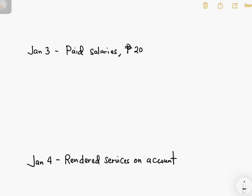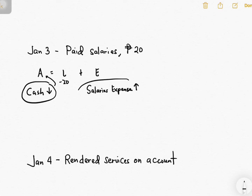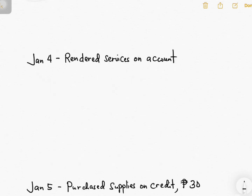Next transaction: paid salaries. The assumption here is that you already used the services of your employees. Following the accrual basis, once you use something you record an expense — so under equity you record salaries expense. From the word 'paid,' you know cash is involved, so under assets you write cash. The company paid, so cash decreases. Expense increased because you incurred and used something. Cash decreasing leads to a decrease in assets by 20, and increasing the expense — same as drawing — will lower your equity.